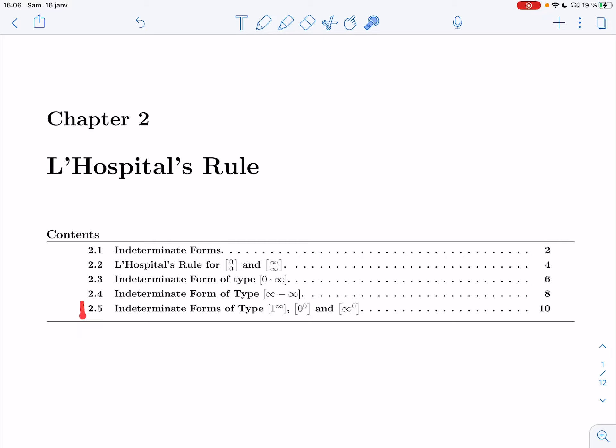Welcome back. In this video, we'll look at section 2.5. We're going to learn how to evaluate indeterminate forms of type 1 to the infinity, 0 to the 0, and infinity to the 0. We'll actually turn these into those and then into these so we can apply L'Hospital's rule. But we're going to use log to go from section 2.5 to section 2.3.